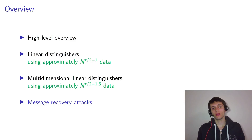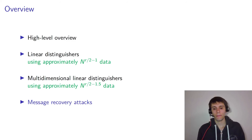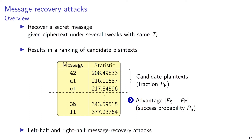Now that we have these distinguishers, it would be nice to turn them into a message recovery attack, since that has more practical impact. The goal of a message recovery attack is to recover a secret message given the ciphertext of this message or a related message. For the attack to apply, the left half of the tweaks must be the same.